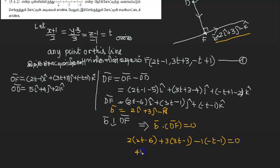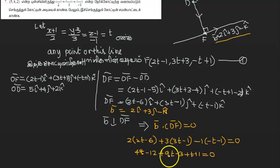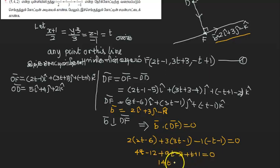This is 4t minus 12. This is 9t minus 3. This is minus 1 into plus t plus 1 equal to 0. This is 4t, this is 13, this is 14t, this is 15t. This is 14t minus 14 equal to 0.